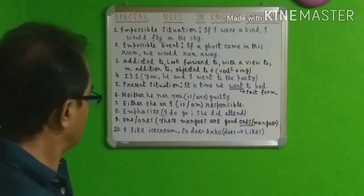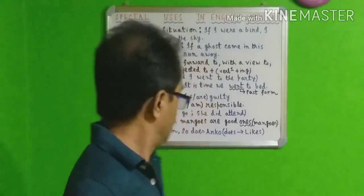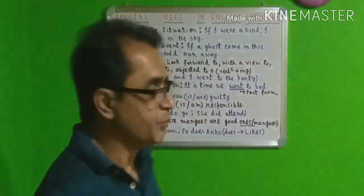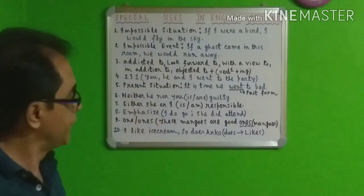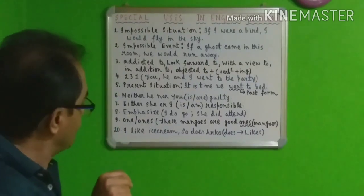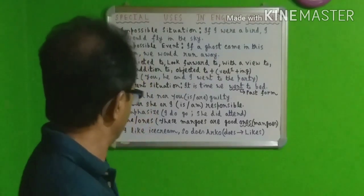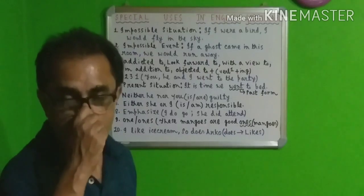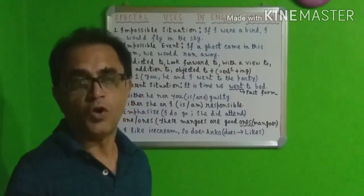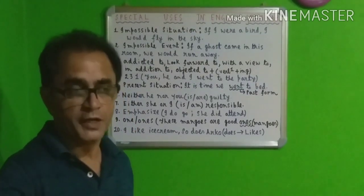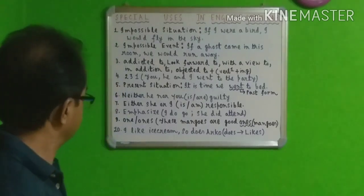Number eight is emphasis. 'I do go.' 'She did attend.' This seems strange because we know that 'do,' 'does,' and 'did' come with negative and interrogative sentences — for example, 'I do not go' or 'She did not attend.' But here they appear in affirmative sentences. Why? Because we want to emphasize. What is the difference between 'I go' and 'I do go'? 'I do go' means I definitely go, I certainly go. 'She attended' is simple past, but 'she did attend' means she definitely attended, she certainly attended. To emphasize in an affirmative sentence, we bring 'do,' 'does,' or 'did.'